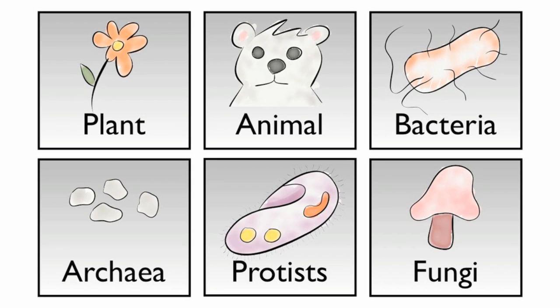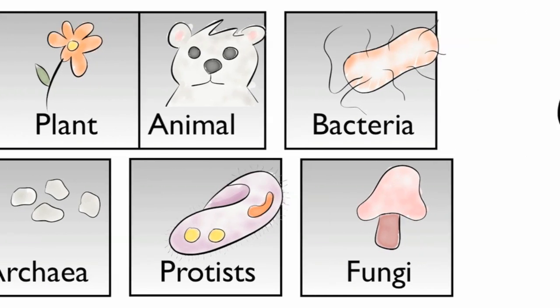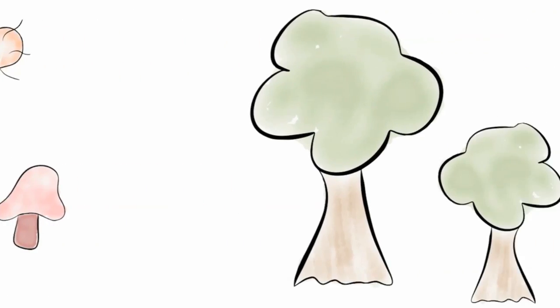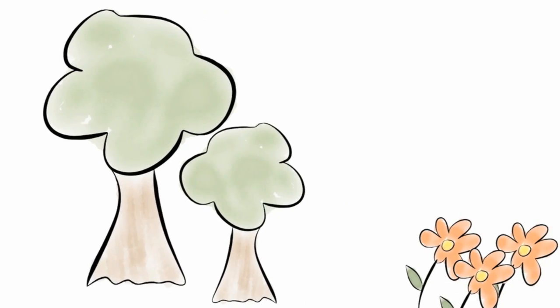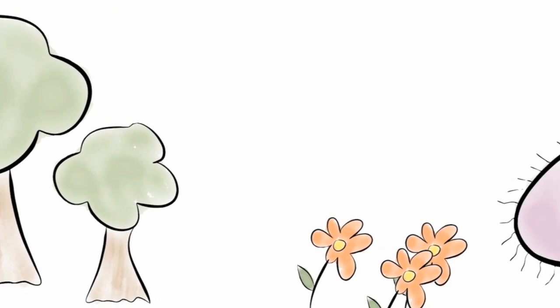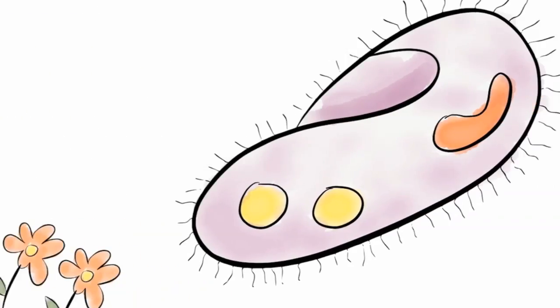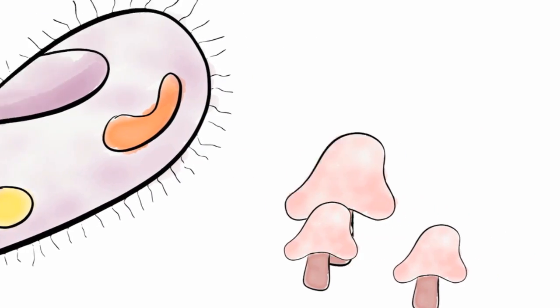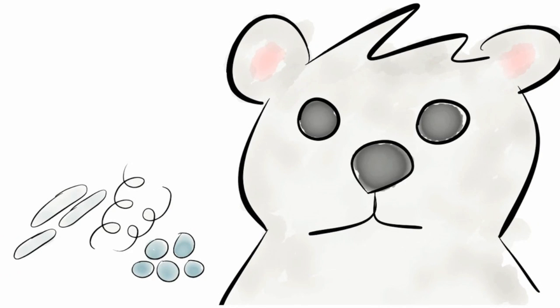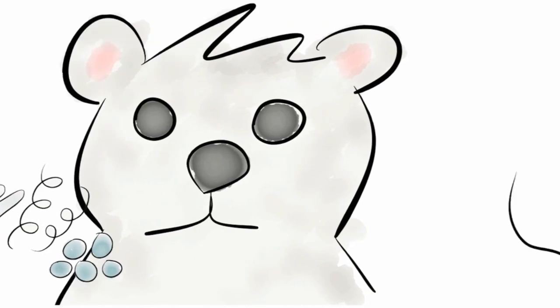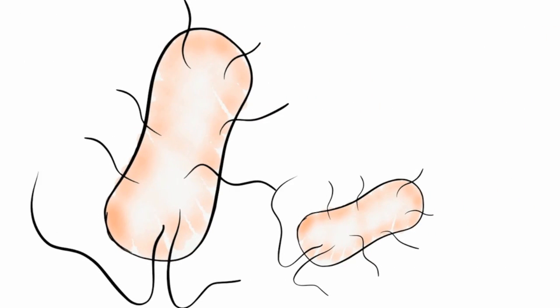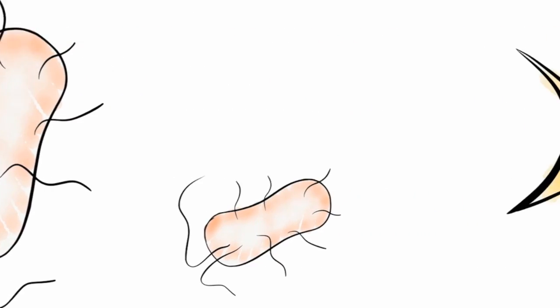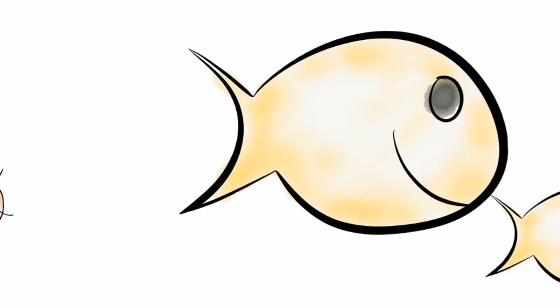So go exploring and try to group your discoveries by cell type, ability to make food, and the number of cells in their body. Place your discoveries into a kingdom.